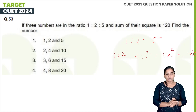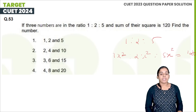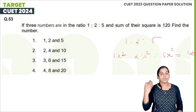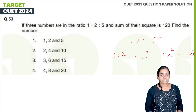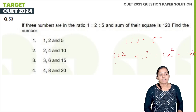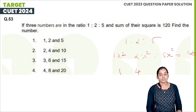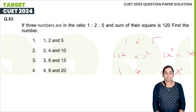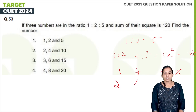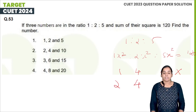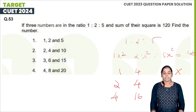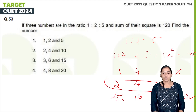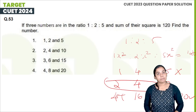Solving: x² = 4, so x = 2. The numbers are 1×2=2, 2×2=4, and 5×2=10. Checking: 2²+4²+10² = 4+16+100 = 120. The numbers are 2, 4, and 10.